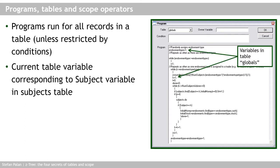The program contains, first off, a number of variables that are in the globals table. Remember, if I don't specify any scope operator, then the variable is written to or taken from the table that the program runs in — so the globals table. This is the case for 'endowment_type' here and also for 'k = 1' here. I've started a loop — Ctree will run everything between these two curly brackets as long as the condition is fulfilled — but I've never changed the table. So these two variables are located in the globals table.